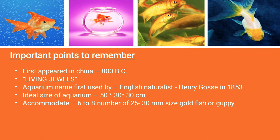The ideal size of an aquarium is 50 x 30 x 30 centimeters. This is not compulsory — we can keep a bigger size also — but if you are keeping a bigger aquarium it will be more expensive.